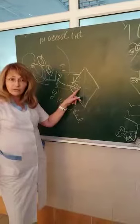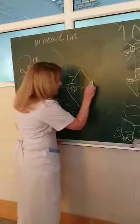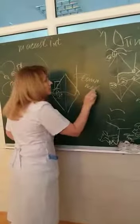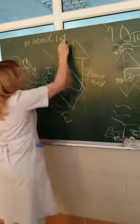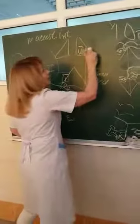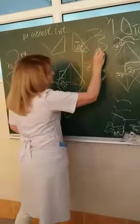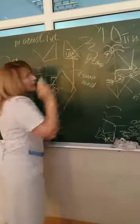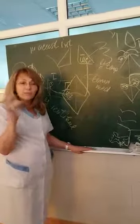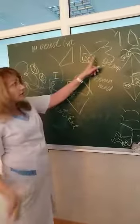Axons of the second neurons of the vestibular analyzer run in different directions. Some fibers run to the opposite side together with the medial lemniscus and contact the thalamus of the opposite side, where third neurons are present. These third neurons run to the cortex of the superior temporal gyrus and the lower portion of the post-central gyrus, since the vestibular analyzer has small cortical areas in both locations.